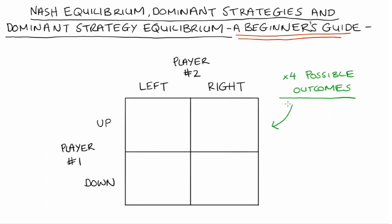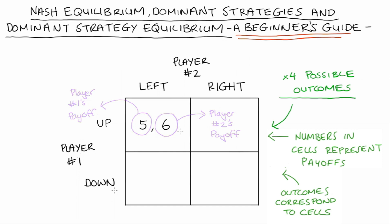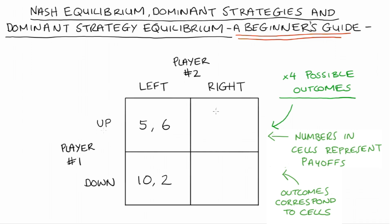So player one has two possible actions and player two has two possible actions as well, meaning there are four possible outcomes. Each outcome corresponds to a cell in the matrix, and the numbers in the cells represent the payoffs each player gets. If player one plays up and player two plays left, player one gets five and player two gets six. If player one plays down and player two plays left, player one gets ten and player two gets two. If player one plays up and player two plays right, player one gets fifteen and player two gets four. If player one plays down and player two plays right, player one gets sixteen and player two gets six.